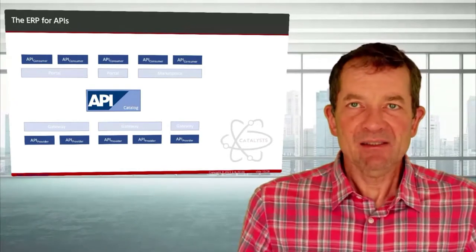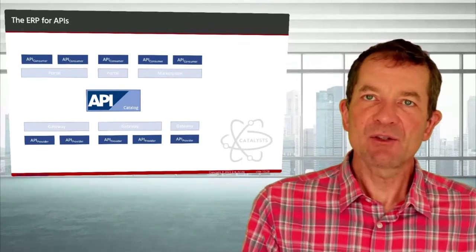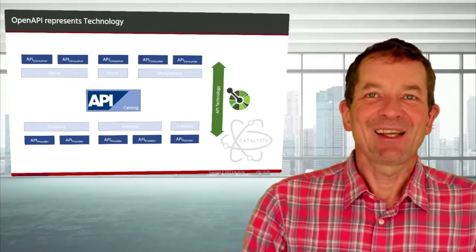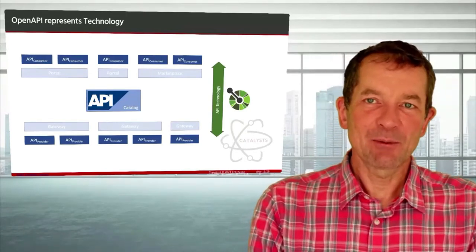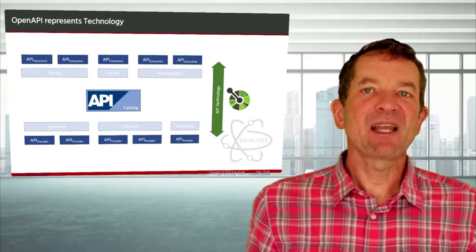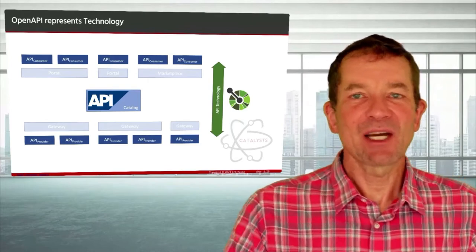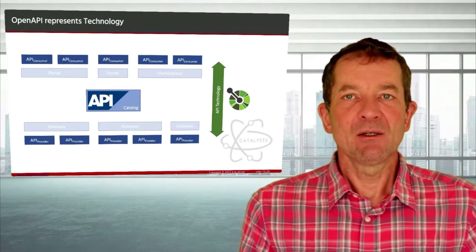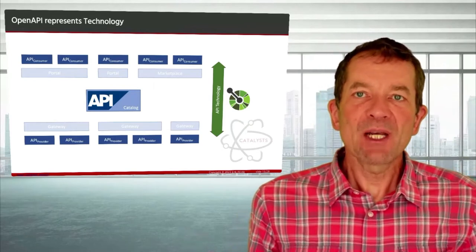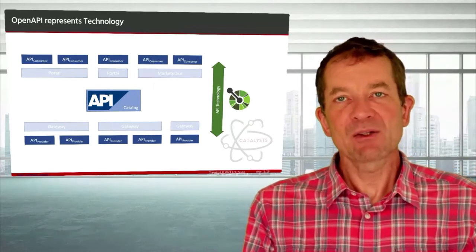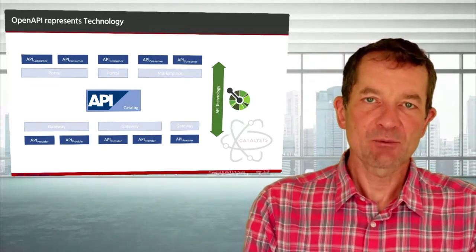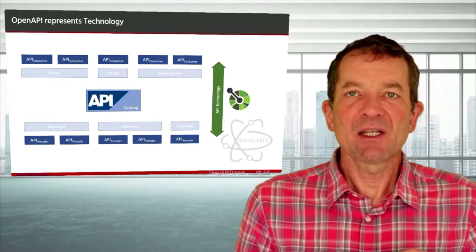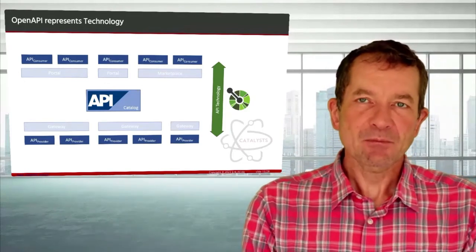And then once you have this component in place, this catalog, that will help you to make sure that your API landscape can grow organically and in a heterogeneous way, then you can put even different portals on top of it, marketplaces, whatever you call these components that allow consumers to find the APIs and to do something with them. Because we're at the ASC conference, OpenAPI plays a really important role here because it allows to establish this shared language between API providers and API consumers. Open API really helps us to build this as an open way because all modern tools do support OpenAPI in some shape or form.